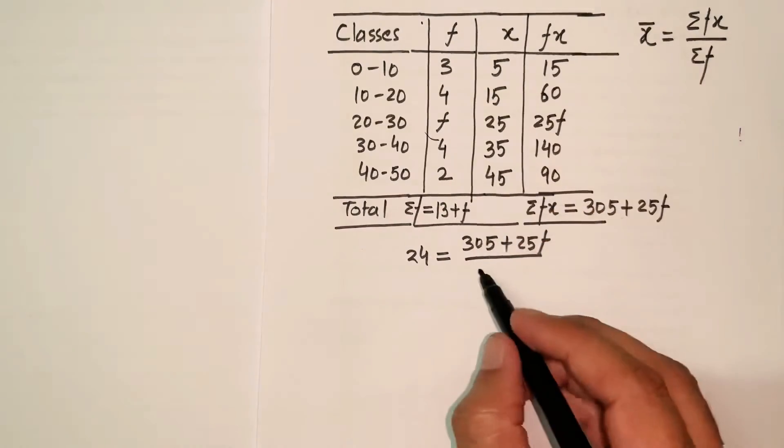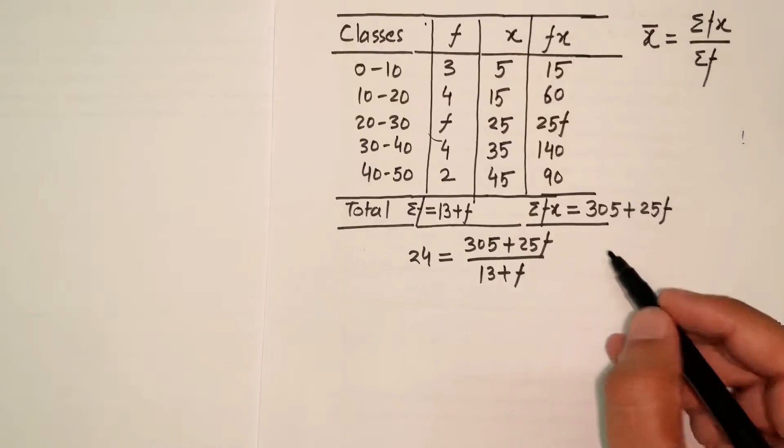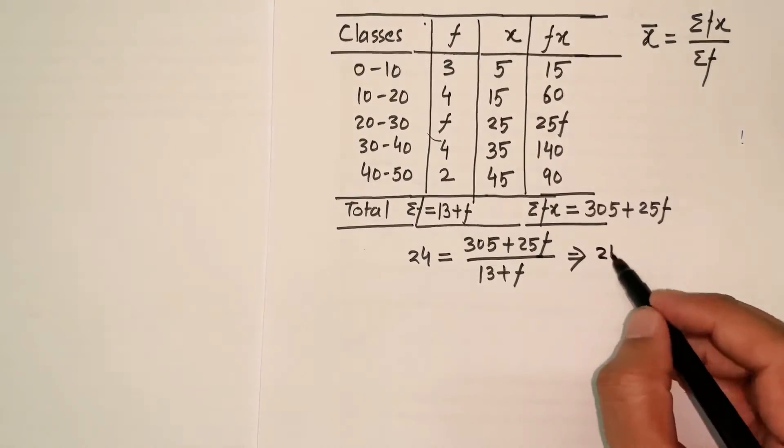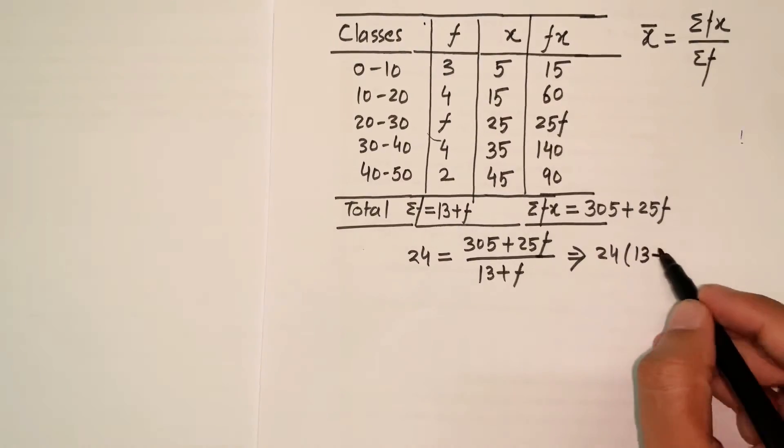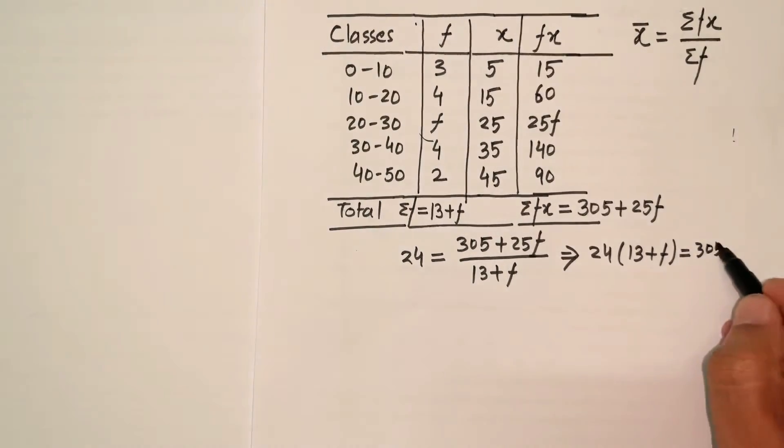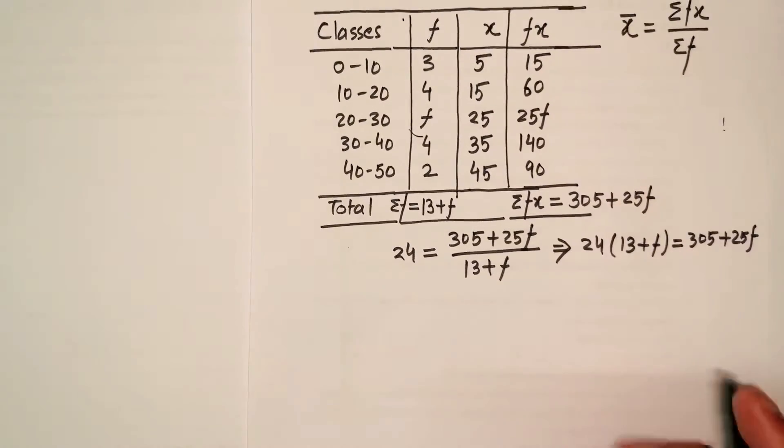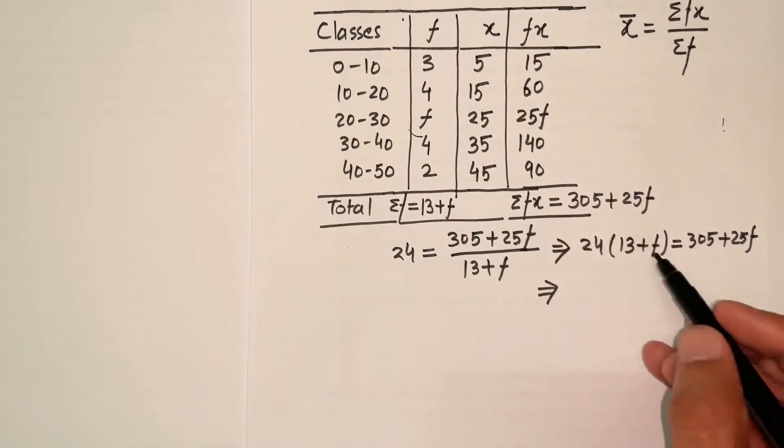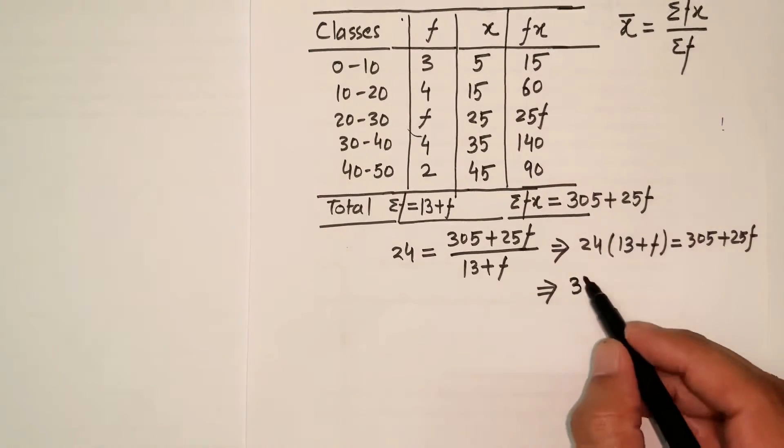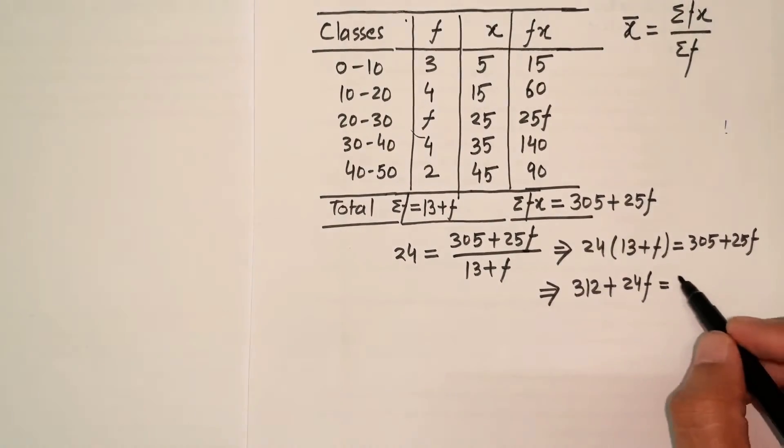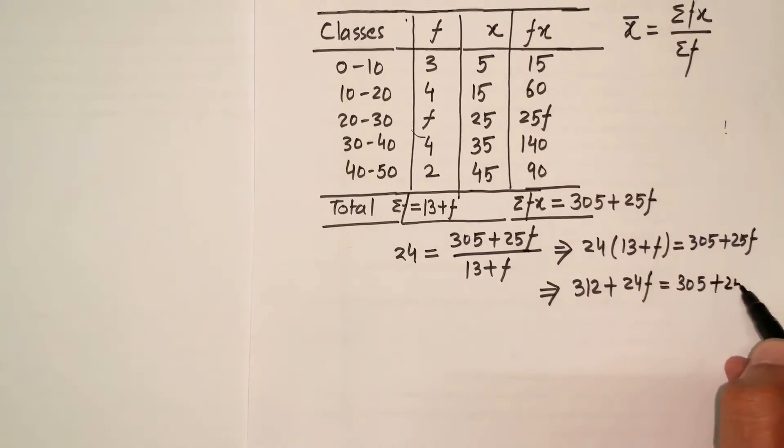Now what I do is a little cross multiplication. That means 24 times (13 plus f) is equal to 305 plus 25f. Now I'll multiply 24 inside the bracket: 24 times 13 plus 24 times f. This gives me 312 plus 24f equals 305 plus 25f.